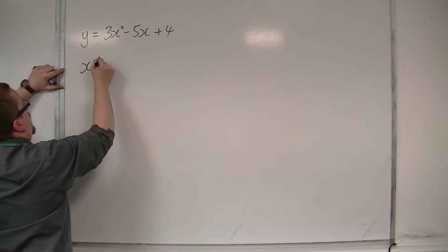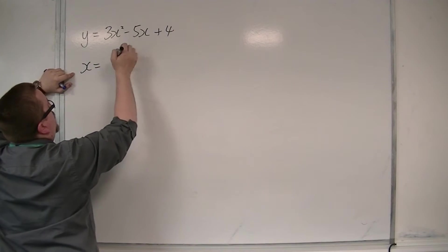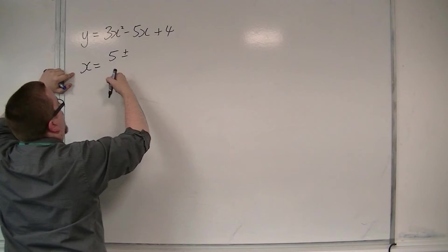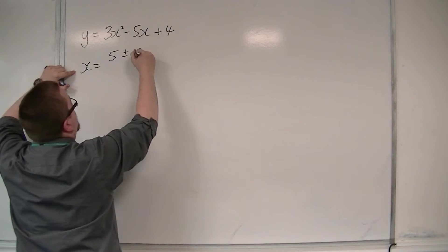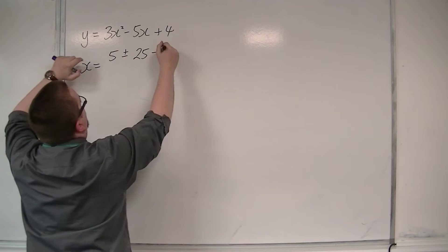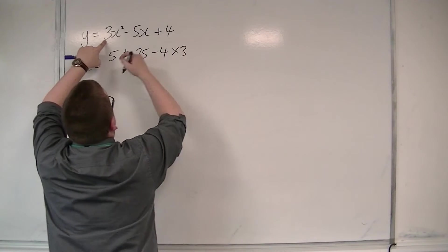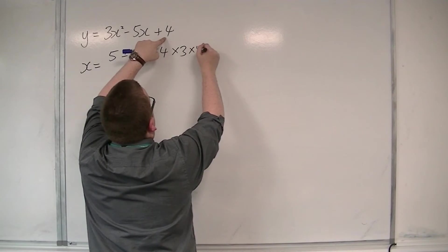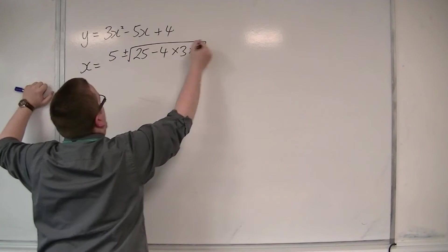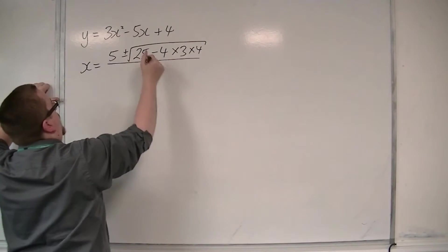So x is equal to minus b, which is positive 5, plus or minus b squared, which is 25, take away 4 times a, which is 3, times c, which is 4, square rooted, all over 2a, which is 6.